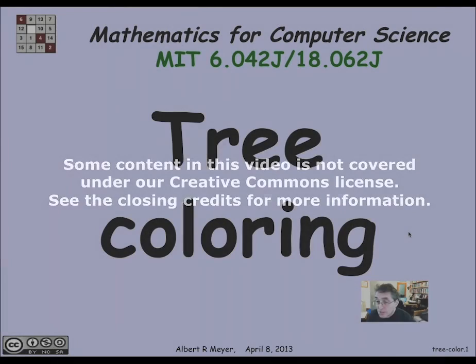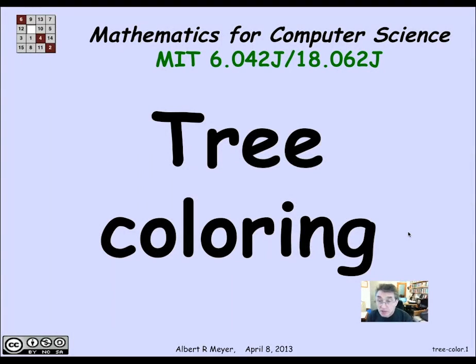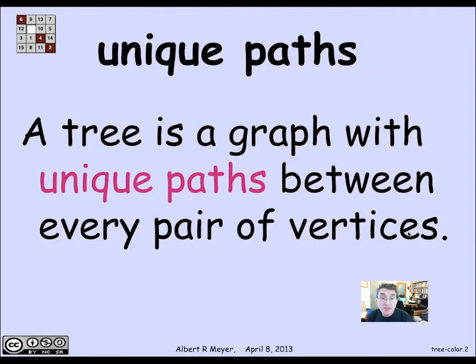Now we can use the unique path characterization of trees to very quickly figure out that every tree is two-colorable. So we know that a tree is a graph with unique paths between every pair of vertices.